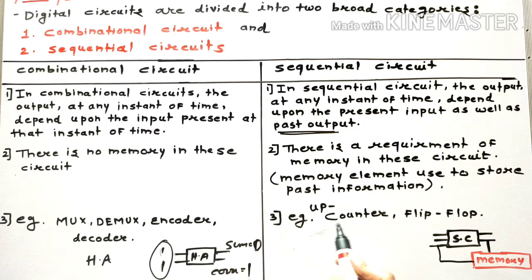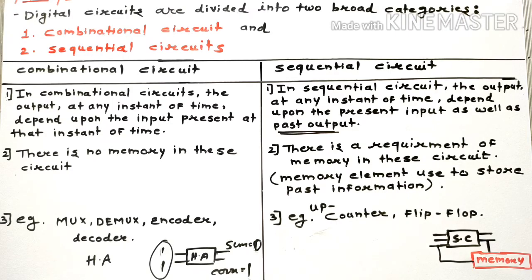In sequential circuits, we have examples like counter, flip-flop, and register. These circuits depend on both the present input as well as the past information. A counter, which you have seen since childhood, counts — it can be an up counter or a down counter.